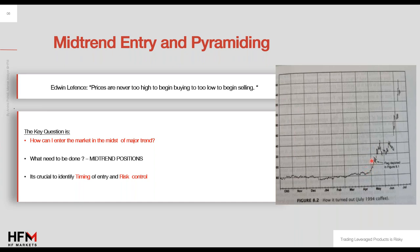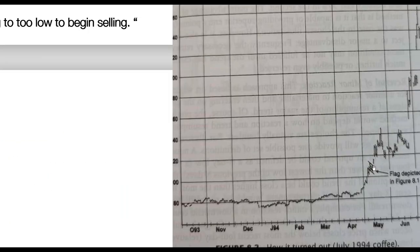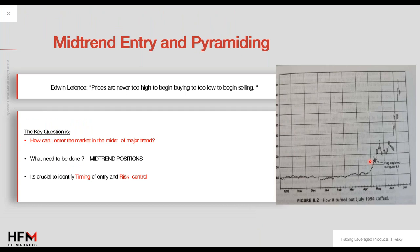The flag pattern — which is a bullish formation — confirmed a few days afterward, with the price gapping up above the flag and extending further. This second chart illustrates the folly of concluding the market was overextended. Incredibly, as of mid-May 1994, coffee prices had only completed about one-fifth of their ultimate advance.